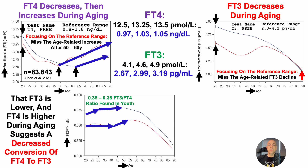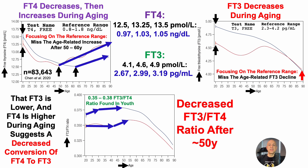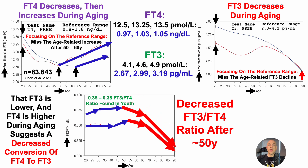After around 50 to 55 years old, there is a significant decline in the free T3 to free T4 ratio during aging, as shown by the red arrows. At older ages, we can expect to see lower values for this ratio of around 0.31 to 0.32.